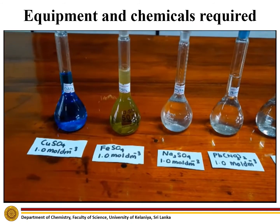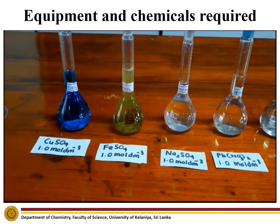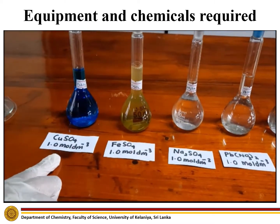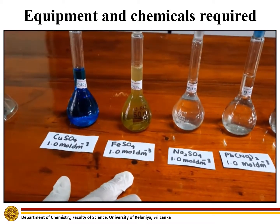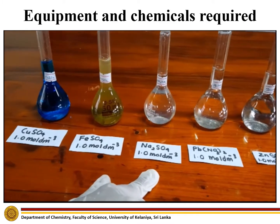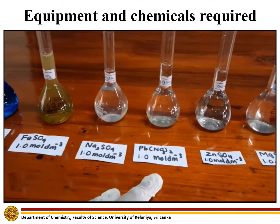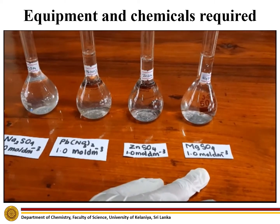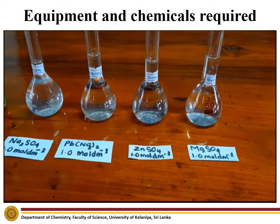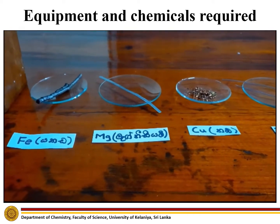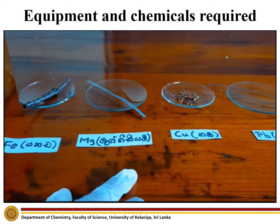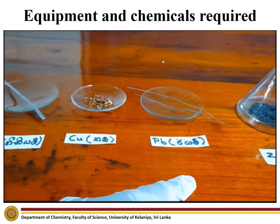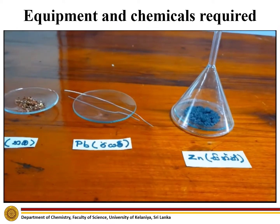The chemicals required for this experiment are 1.0 mol per cubic decimetre copper sulphate, ferrous sulphate, sodium sulphate, lead nitrate, zinc sulphate, and magnesium sulphate. In addition, iron, magnesium, copper, lead, and zinc metals are required for this experiment.